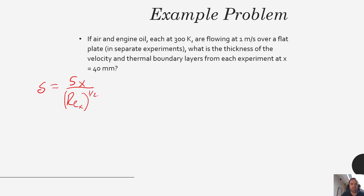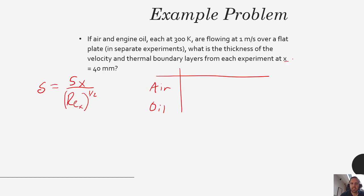We would calculate a Reynolds number for air at these conditions and a Reynolds number for oil at these conditions. I'm going to skip the actual steps — you can go ahead and verify these calculations on your own. We're looking at a specific x at x equals 40 millimeters. Note that the velocity boundary layer thickness is a function of x, and the Reynolds number is also a function of x, so it changes depending on how far down the plate you go. The Reynolds number for air is 2517; for oil it is 72.7.